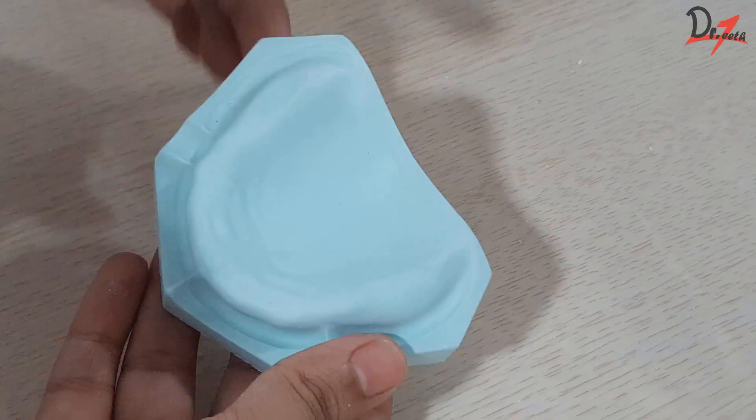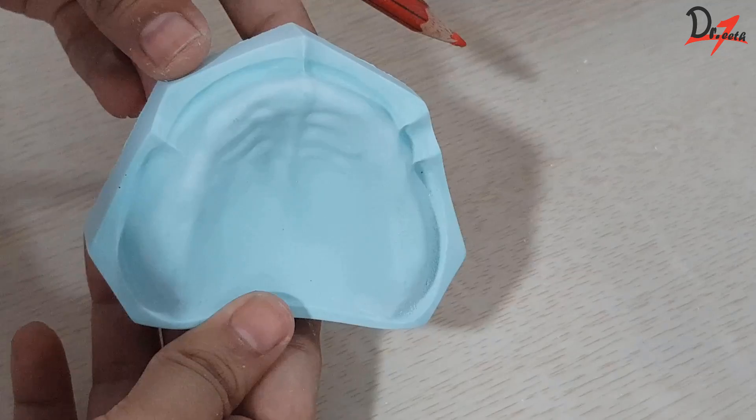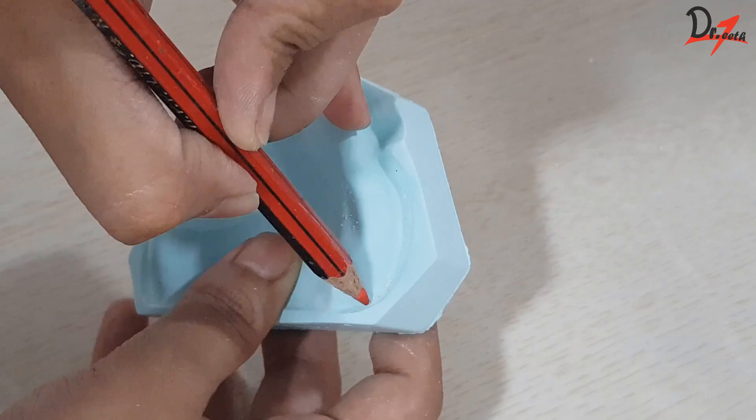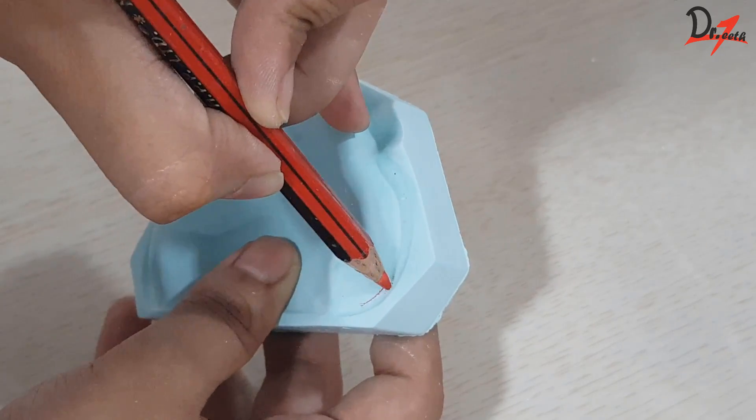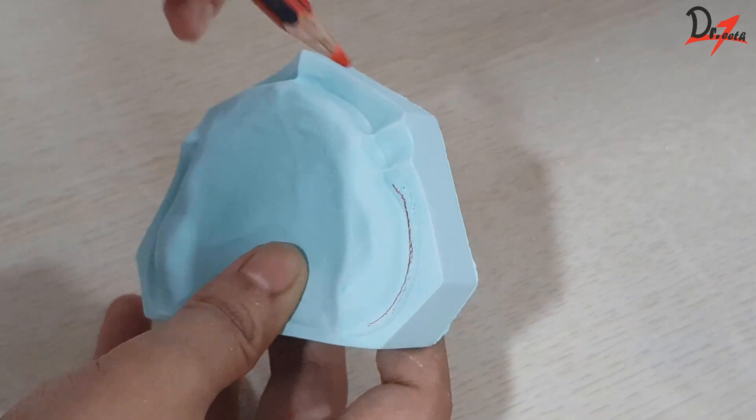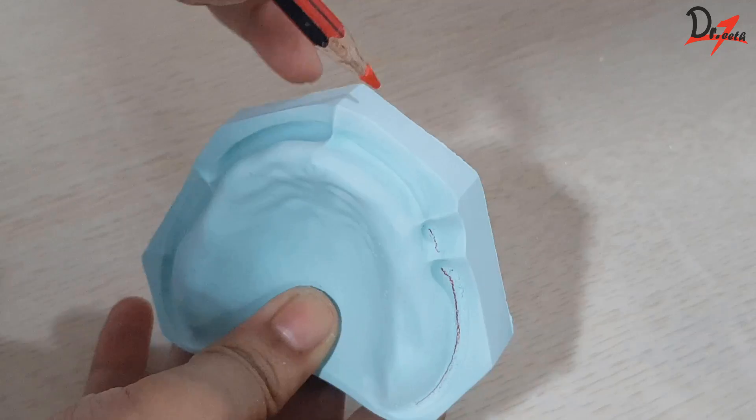So first of all, we will begin by marking the depth of the sulcus. And if you look closely, the sulcus is little wide. Now where to draw it? We have to draw the line where the bone ends and the sulcus begins.